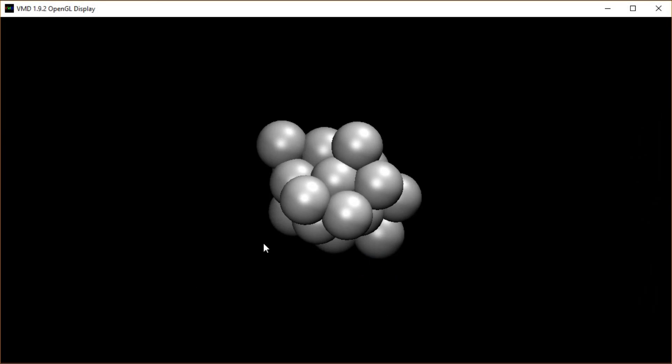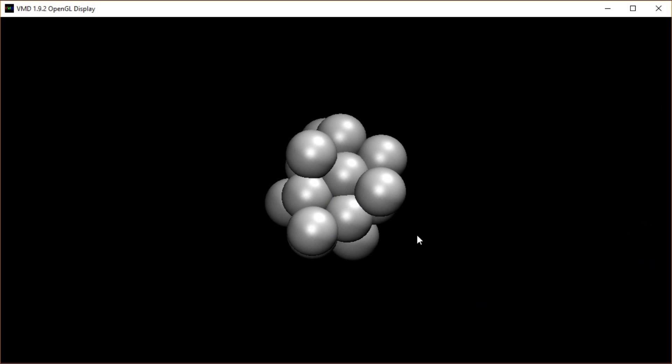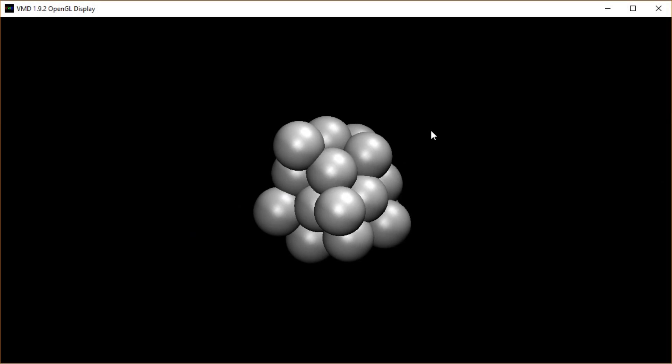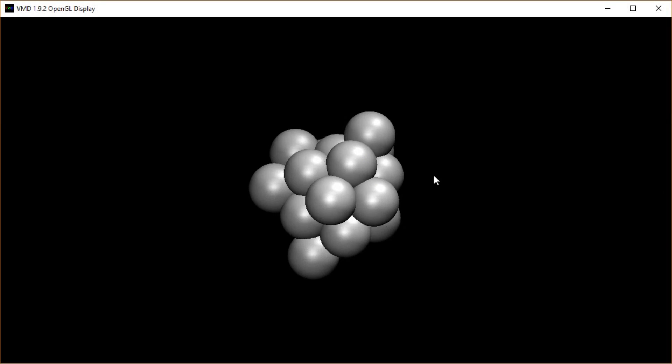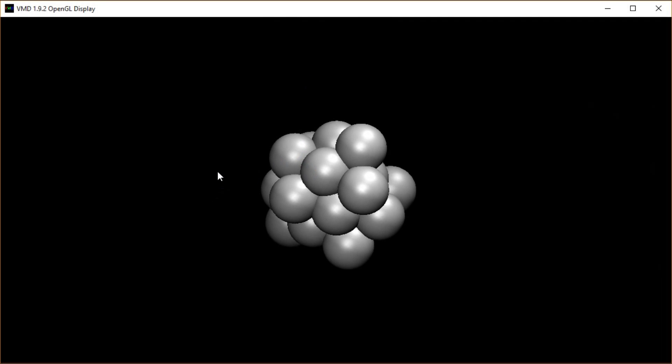That is an optimized local minimum. It's not the global minimum. The global minimum would be whatever is the most spherical kind of glob they could clump into. But this is a much better low-energy structure that we could use as a starting place for some simulation under the right circumstances.